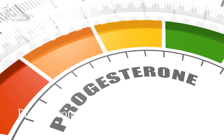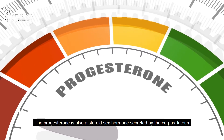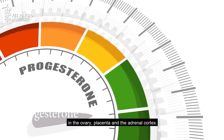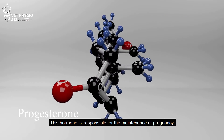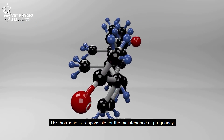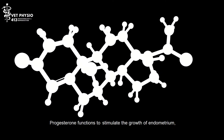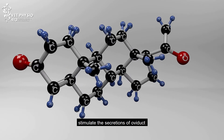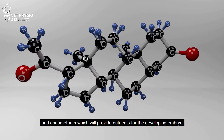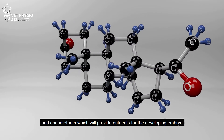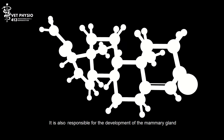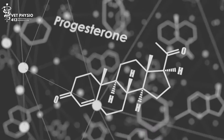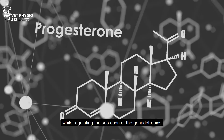Progesterone. Progesterone is also a steroid sex hormone secreted by the corpus luteum in the ovary, placenta, and the adrenal cortex. This hormone is responsible for the maintenance of pregnancy. Progesterone functions to stimulate the growth of the endometrium, stimulate the secretions of the oviduct and endometrium which provide nutrients for the developing embryo, and is responsible for the development of the mammary gland and contractility of the uterus in gestation, while regulating the secretion of the gonadotropins.